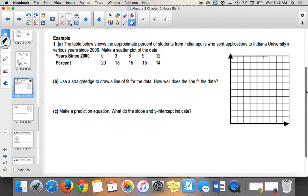So number one. The table below shows the approximate percentage of students from Indianapolis who sent applications to Indiana University in various years since 2000. Make a scatter plot of the data. You should always label your axes. On the bottom, I'm going to say years since 2000. That's my X. And then my Y is going to be the percent of students from Indianapolis.